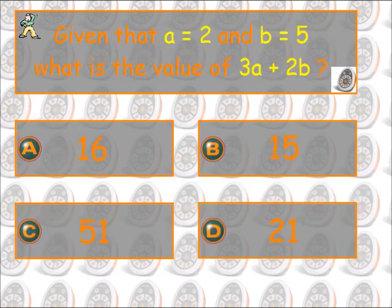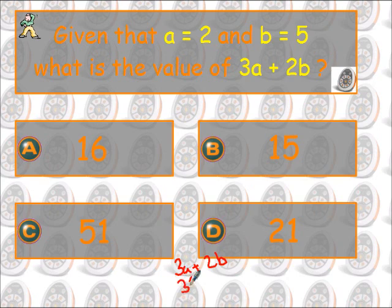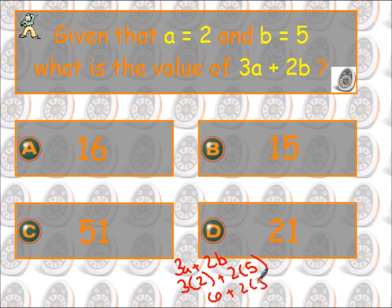Alright, over here we've got 3a plus 2b. My a value is 2, my b value is 5. So 3 times 2 is 6, plus 2 times 5. Now I've got 6 plus 10, which gives me 16.